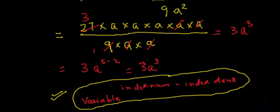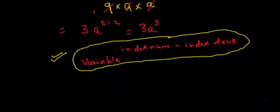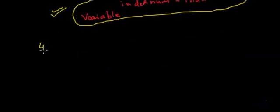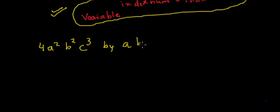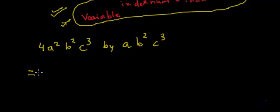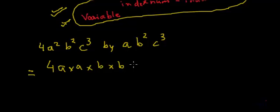Let me take one more example of division. We have to divide 4a square b square c cube by ab square c cube. We will learn it in both ways — without using the formula and then verify using the formula. Let me first write it in fraction format. So the numerator will be 4 multiplied by a multiplied by a, then b square which is b multiplied by b, and c cube which is c multiplied by c multiplied by c.